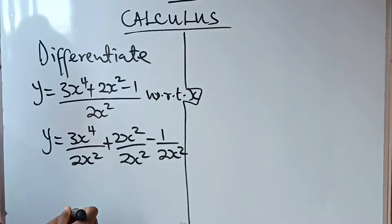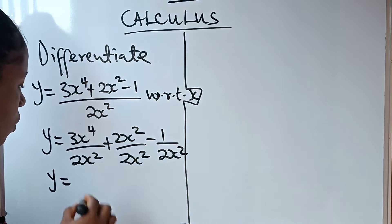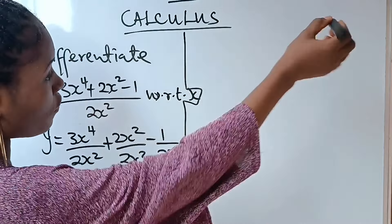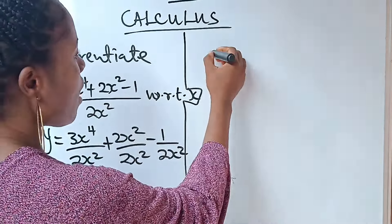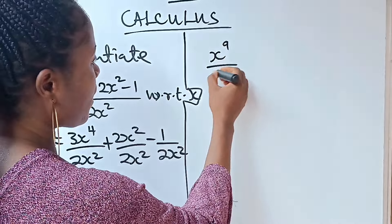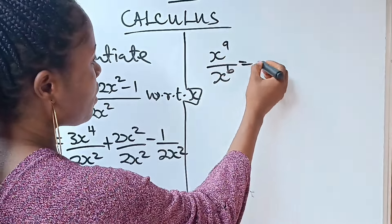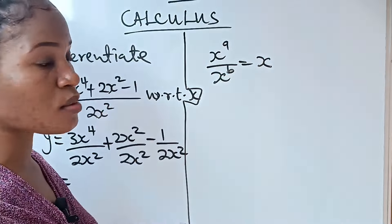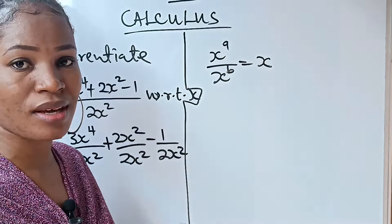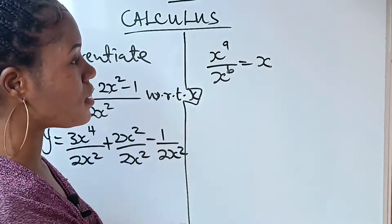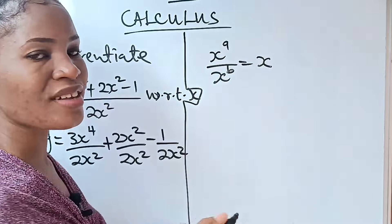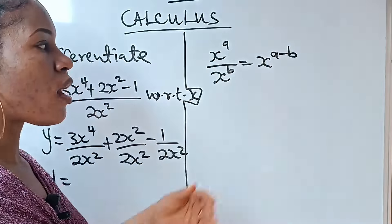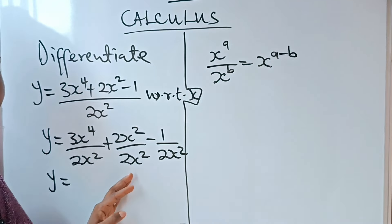Now, what do we do? We use the law of indices. In the law of indices, x to the power of a divided by x to the power of b equals x to the power of a minus b. You pick one base and subtract the powers. Luckily for us, what we have here is x as well.